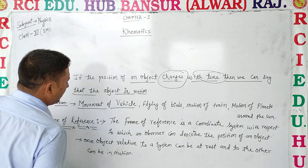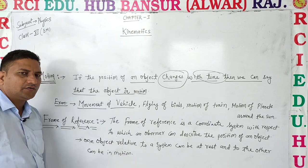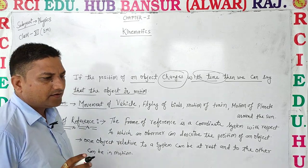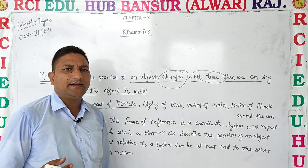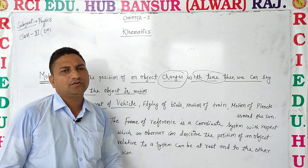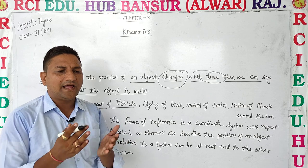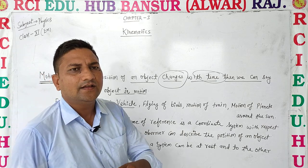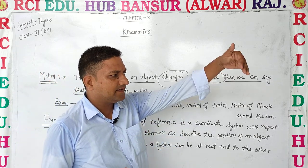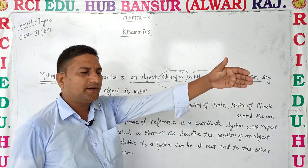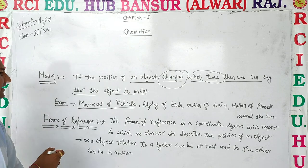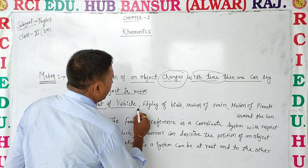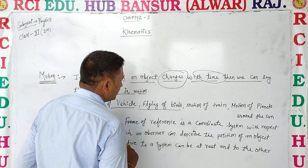Motion means change in position with respect to time. Examples of motion include the flying of birds.